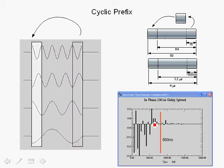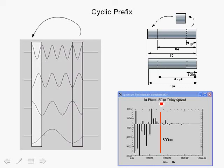Let's take a look at the impulse response. This is the in-phase impulse response for a channel with an RMS delay spread of 150 nanoseconds — impulses can exceed even 800 nanoseconds. When we talk about 16 samples at a sampling rate of 20 megahertz, the interval between samples is 1 over 20 megahertz or 50 nanoseconds. So 16 samples gives us 16 times 50 nanoseconds, which is 800 nanoseconds. The cyclic prefix for 802.11a is therefore 800 nanoseconds.